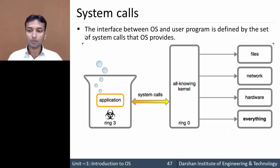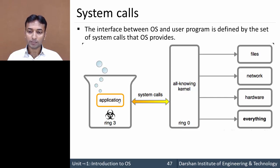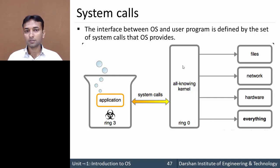Let's take an example. Suppose we are having an application program or a user program — that is the application — this one is the kernel or we can say operating system, and these are the different services that are provided by this operating system.